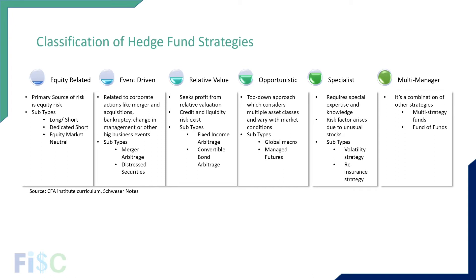The second classification is event-driven, where actions are based on corporate events like mergers, acquisitions, bankruptcy, change in management, or other big business events. The two strategies discussed in detail in the curriculum are merger arbitrage and distressed securities. Merger arbitrage involves investing based on the expectation of whether a merger will go through or fail. Distressed securities investing involves buying distressed securities with the expectation that they will bounce back.